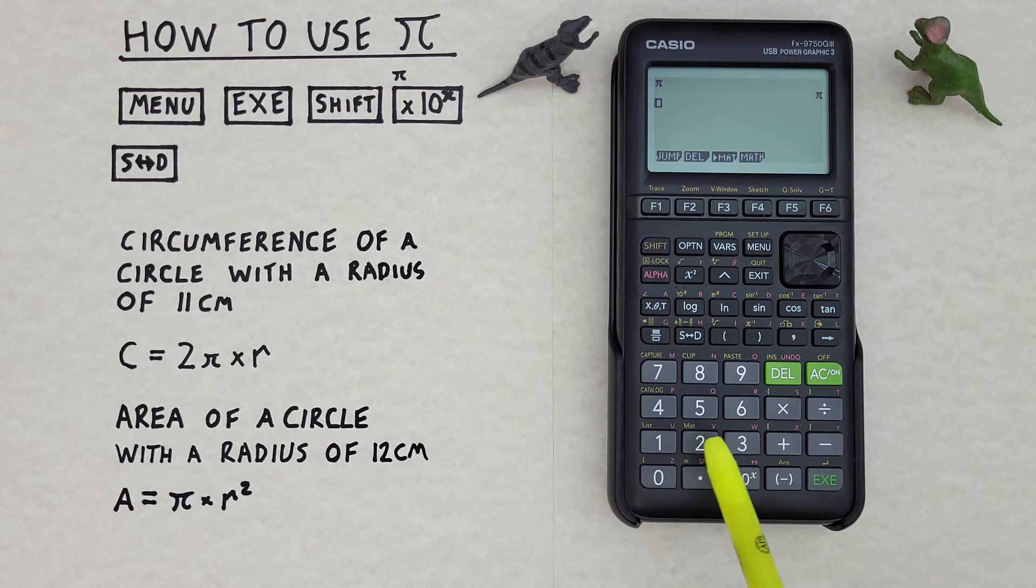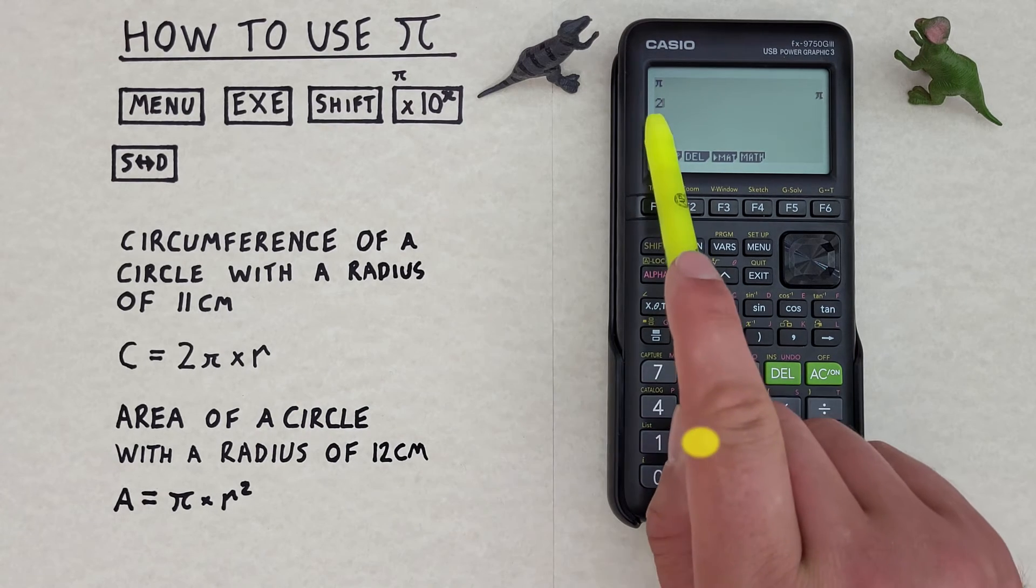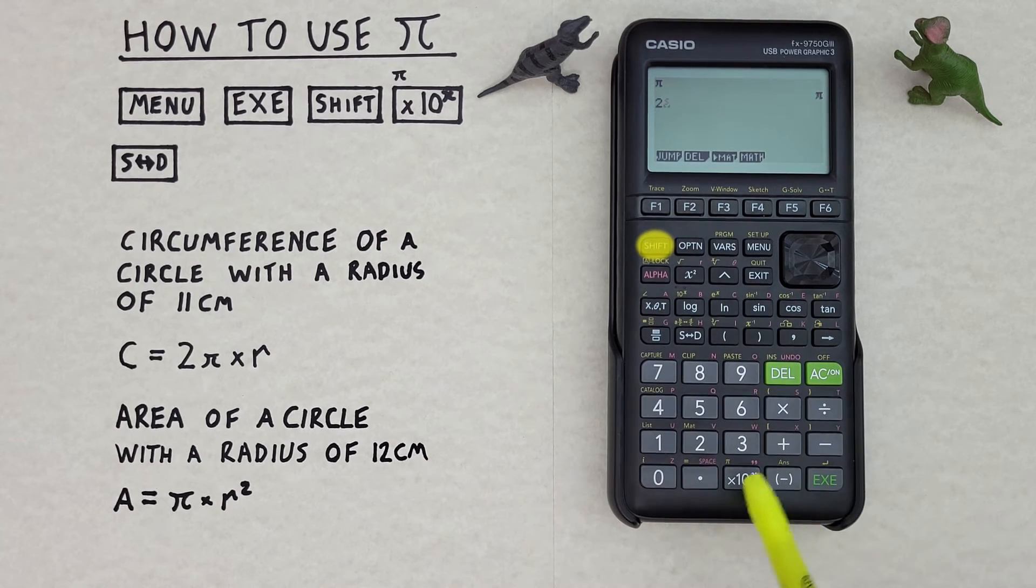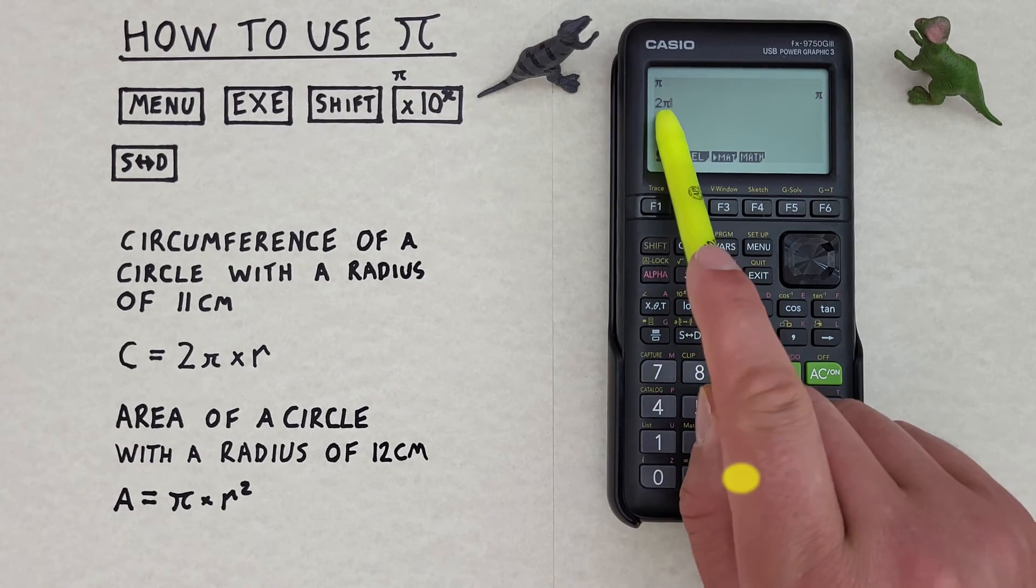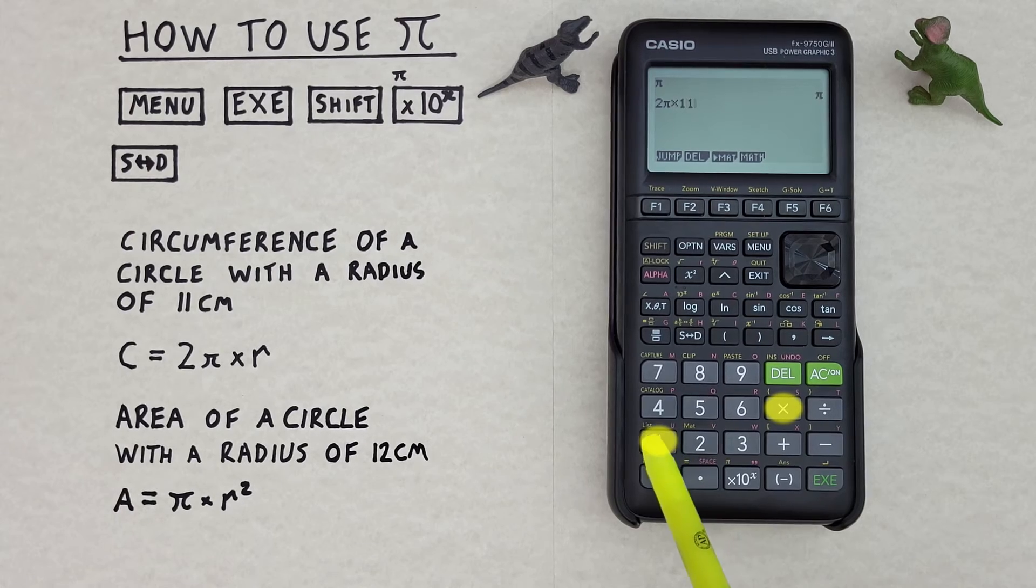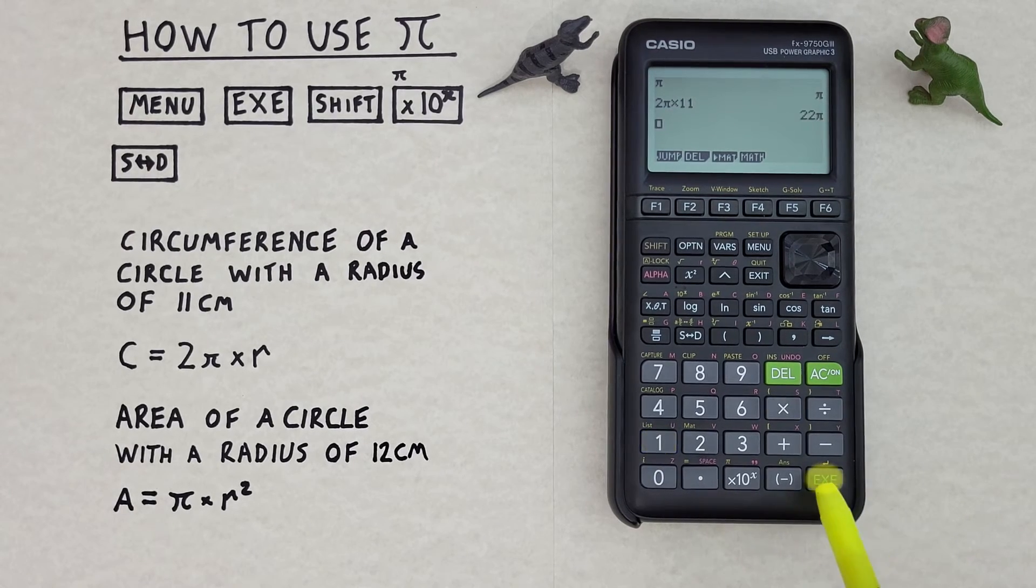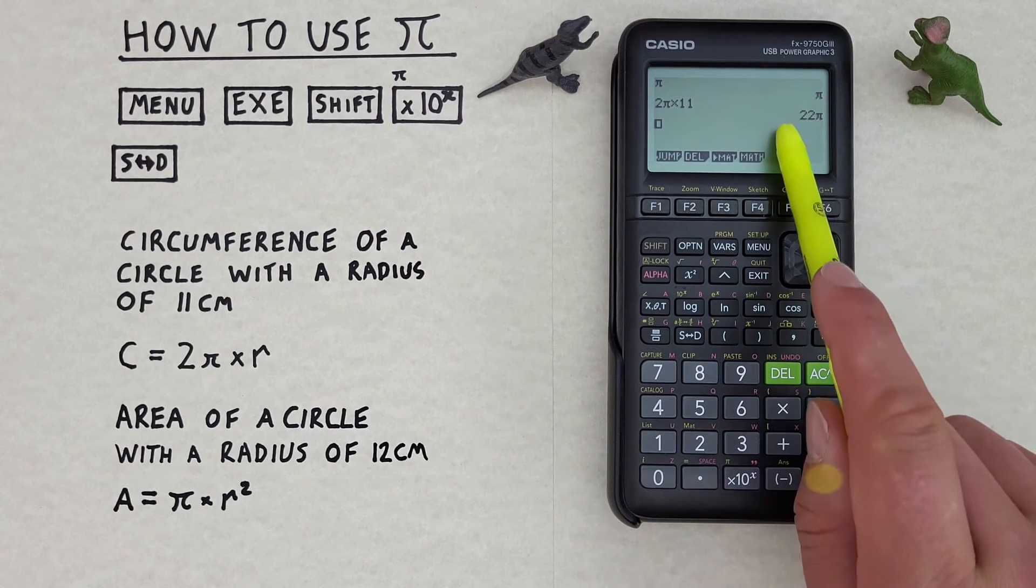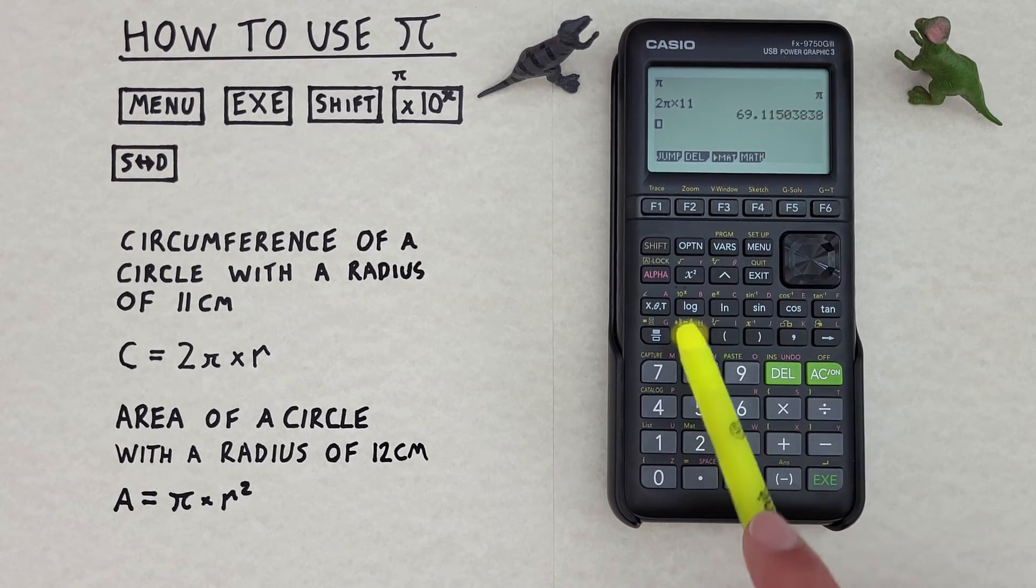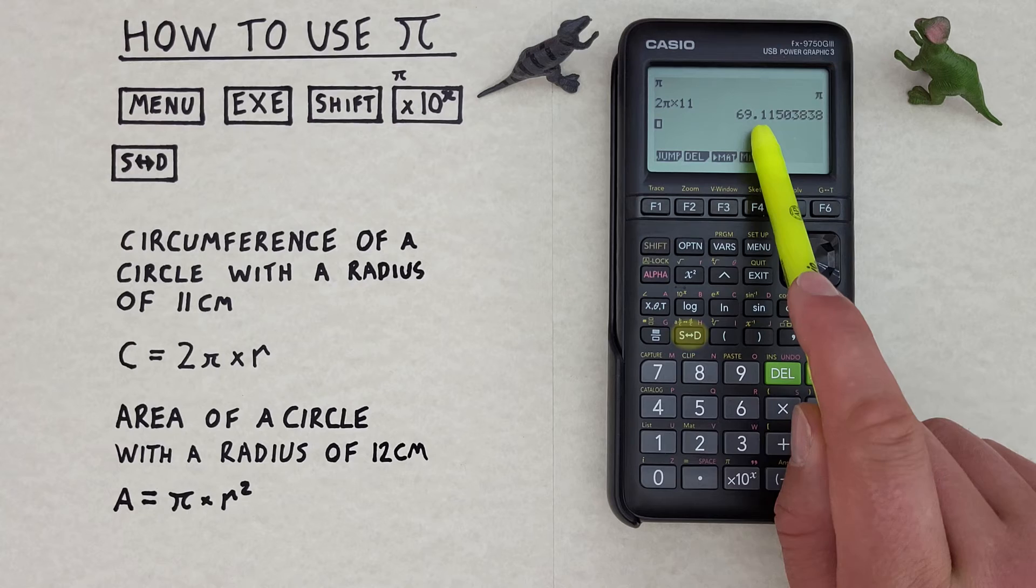So we can start by entering the 2, and then we need to enter the Pi. So we go shift times 10 to the x, there's our Pi. And then times R, which is our radius of 11 cm. So times 11, press equals or execute. And that gives us 22 Pi, which we can convert to 69.115 etc.